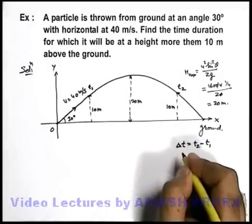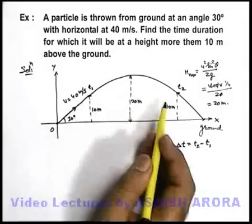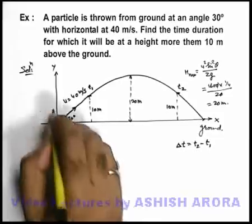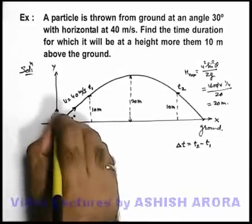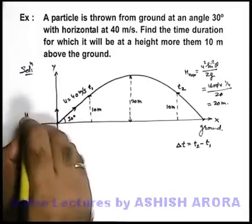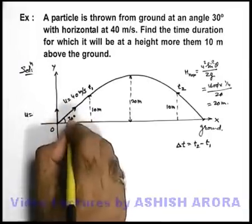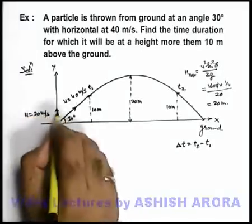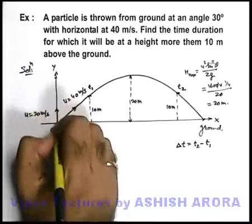Now in this situation, we have already studied that whenever we are required to analyze the time, we need to use the motion in y direction. We can see when the particle was thrown at 40 meters per second, its vertical velocity with which it was thrown is 40 sine 30 degree that will be 20 meters per second. So it goes up, reaches the maximum height and then comes down.